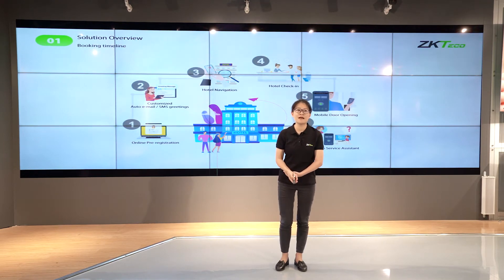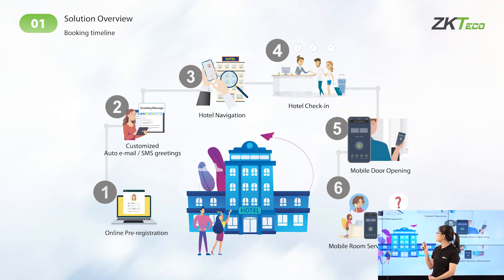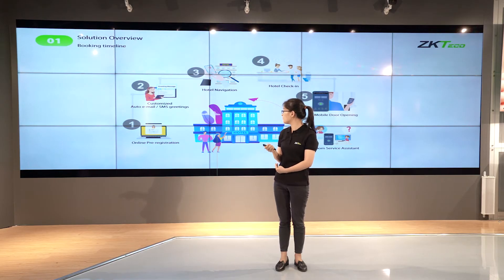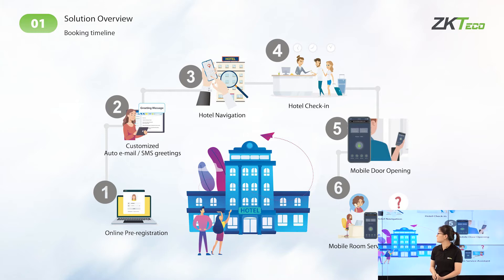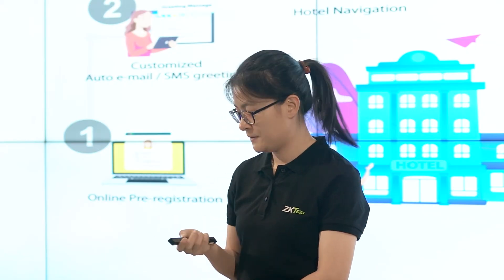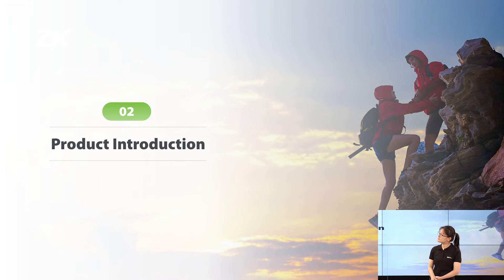In order to better understand our solution, we have mapped out the whole process of checking in and checking out. There are a few key points which make it differ from the traditional solution. In Step 2, at the online pre-registration, you will get an email or SMS greeting message from our system. In Step 5, you can use your mobile phone to open your door, and you can also call for room service with your mobile phone. This is the general introduction of our solution overview. Next, let's go to the product introductions.